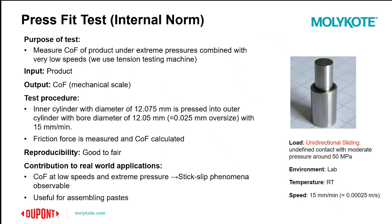Next, we'll discuss our application testing capabilities. The first test method is press fit testing. The purpose of this test is to measure the coefficient of friction of a product under extreme pressures combined with very low speeds. This is done by pressing an inner cylinder into an outer cylinder and measuring the friction force, which is then used to extrapolate a value for the coefficient of friction — replicating a stick-slip phenomenon.